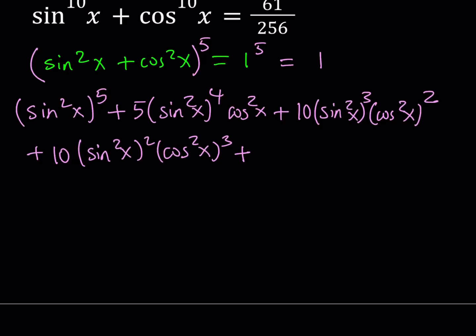Notice that 2 plus 3 is 5 — it's always the case. And then we continue with the 5th term. We switch the powers: sine squared x is going to be the 1st power, and that will be multiplied by cosine squared x to the 4th power, and we'll end up with cosine squared x to the 5th power. And we know that this equals 1.